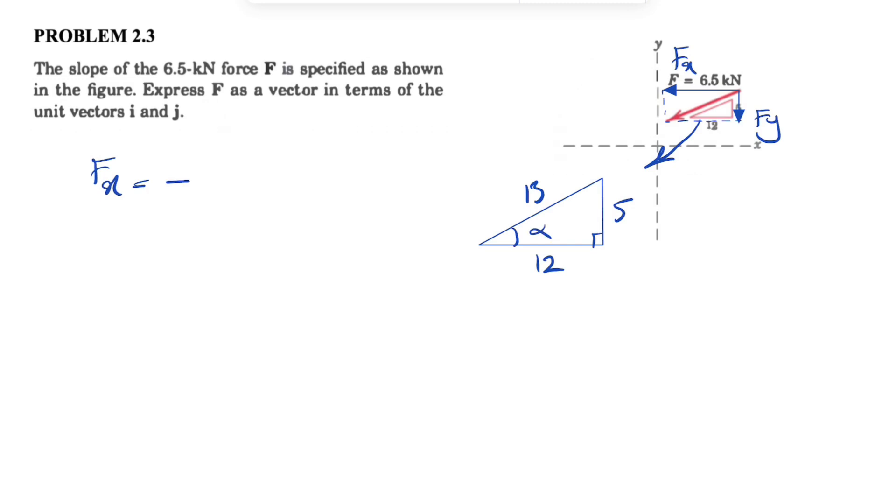So our F is 6.5. And the x component would be cosine of alpha. And cosine of alpha in here would be the adjacent, which is 12 over the hypotenuse 13. So 6.5 times 12 divided by 13. Let's calculate this.